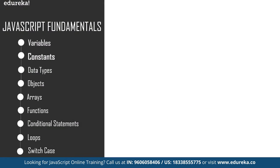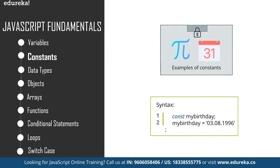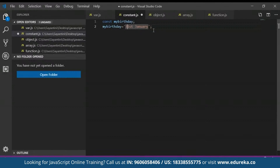Next up is constants. Constants are fixed values that do not change during execution time. To declare a constant in JavaScript, we use the const keyword. You just use const and then provide a constant value to the variable. It's very easy to declare a variable and a constant in JavaScript.